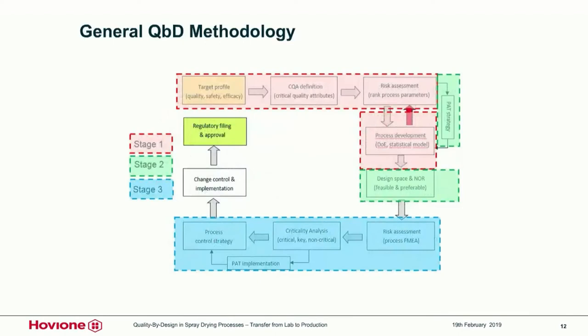This is a general picture of how to approach a quality by design methodology, used among other companies like Hovium. It starts in the left corner with the product target profile, which tells you about the quality, safety, and efficacy of the product. Based on that, you define your critical quality attributes, make a first assessment of process parameters most likely to be important, and also start defining the PAT strategy — though it may be a little early at this point.